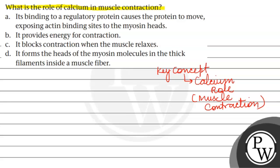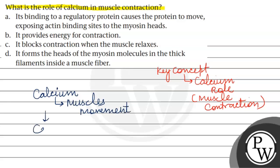First of all, you will have heard that calcium is very important for muscles to move. Calcium ions bind to tropomyosin, which is a protein.